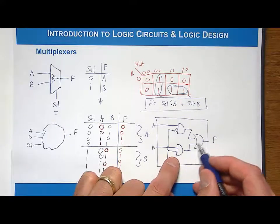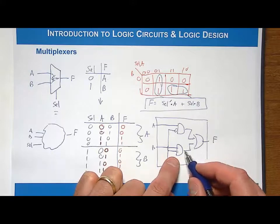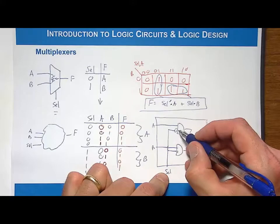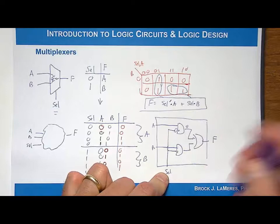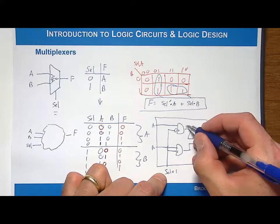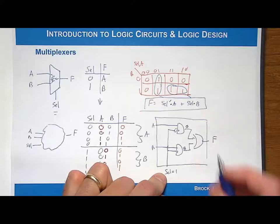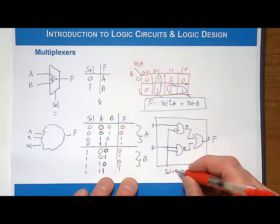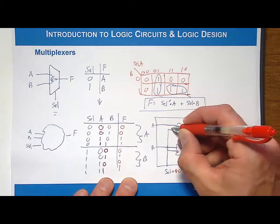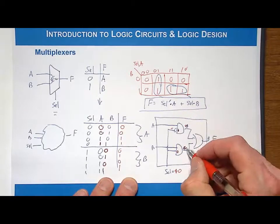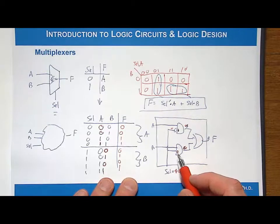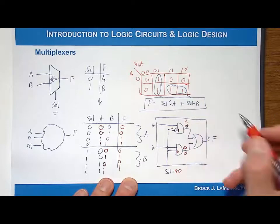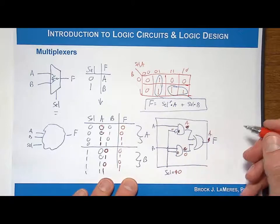When select is 1, the complemented input to the first AND gate becomes 0, so that AND gate outputs 0. The second AND gate sees select=1 and passes B. Since anything ORed with 0 is itself, the output is B. When select is 0, the complemented signal becomes 1, so the first AND gate passes A, and the second AND gate outputs 0 — giving output A. The select lines either pass a variable through an AND gate (anything ANDed with 1 is itself) or de-assert it (anything ANDed with 0 is 0).